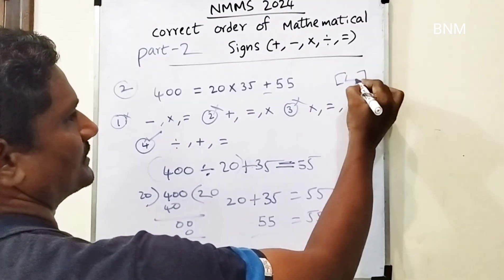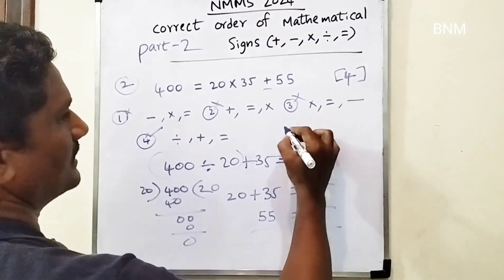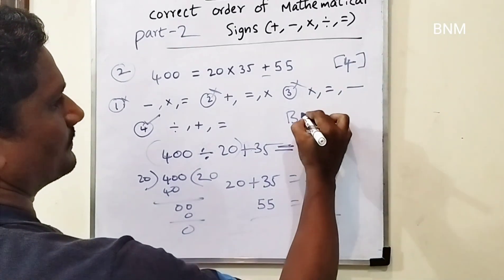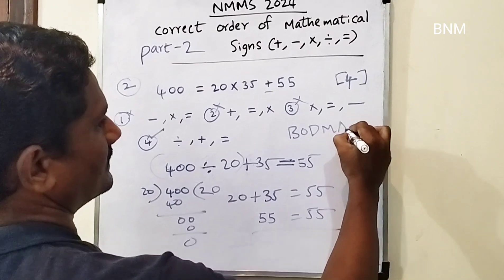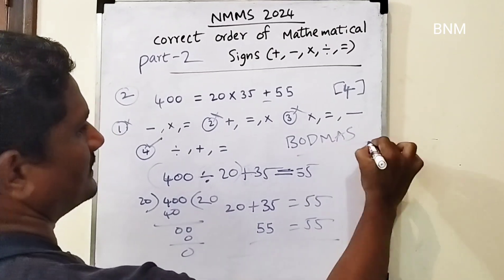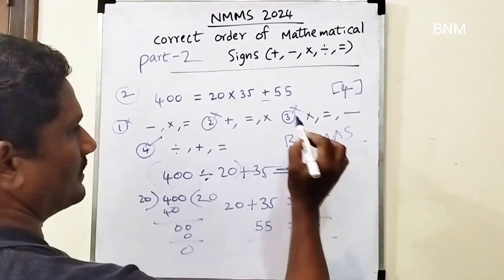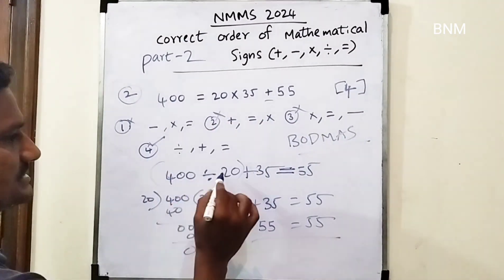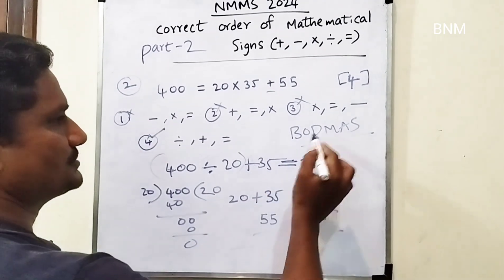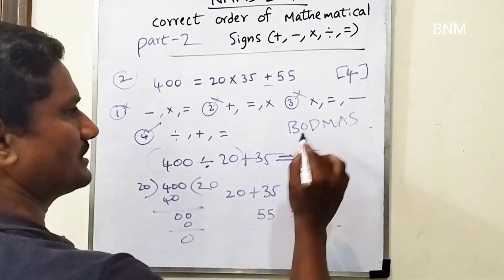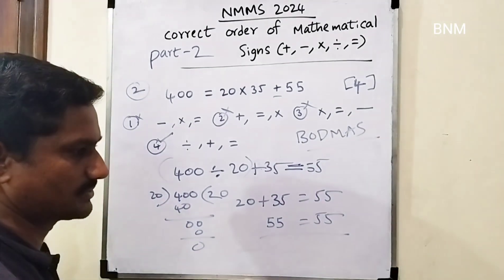For the fourth one, we should get the correct answer. Nothing else is the right answer. If you do this, you will follow the BODMAS order. Then you will do division, then multiplication, then addition, then subtraction.